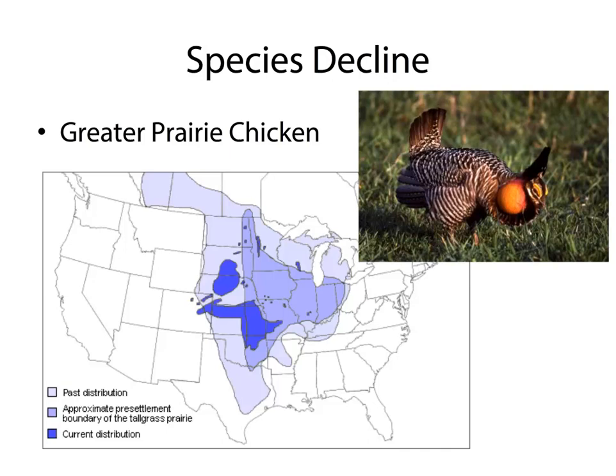The greater prairie chicken's range illustrates this dramatically. The light pink area used to be the extent of the prairie many years ago; the middle purple shows extent just before humans moved in; the dark purple is the current distribution. Illinois used to be covered in prairie, and now it's down to just tiny specks. Greater prairie chickens that used to be found all over are no longer found. They have the cutest mating dance called lecking or booming, where they stand on a stump and stomp their little feet — one of the species I seriously hope comes back.